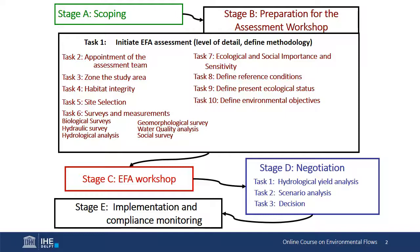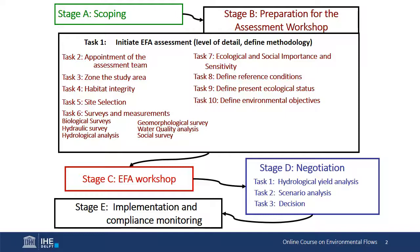This gives an overview of the different tasks. Stage A is scoping, where one looks at the river generally, doing a general survey to get an idea of the whole study area of interest. Then into Stage B, preparation for the environmental flow assessment workshop, with tasks including appointing the assessment team, zoning the study area, habitat integrity assessment, selecting sites for detailed studies, surveys and measurements, field tasks, ecological and social importance and sensitivity, defining reference conditions, defining present ecological status, and defining environmental objectives.